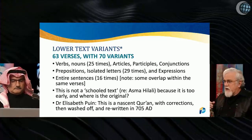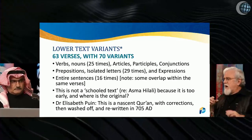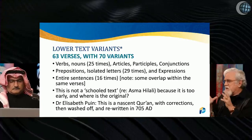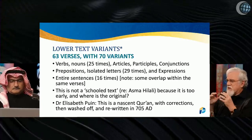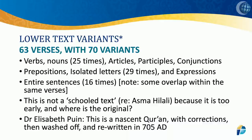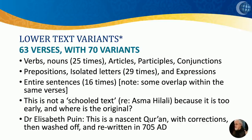There are verbs and there are nouns — 25 times there are different verbs and nouns between the layers. Sometimes articles are missing, participles and conjunctions are different between the two layers. 29 times you have differences in prepositions and isolated letters. Also expressions change — 16 times entire sentences are different.